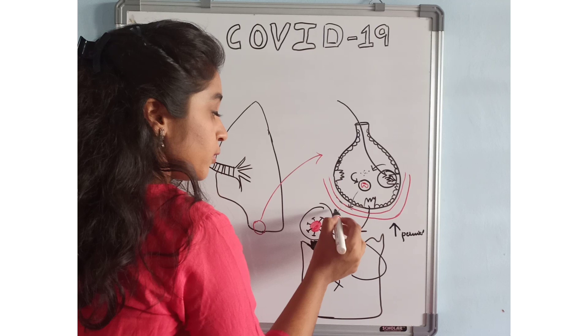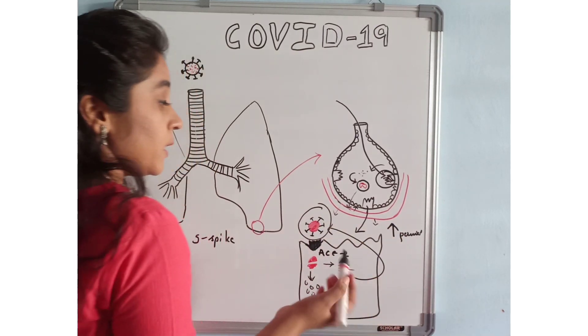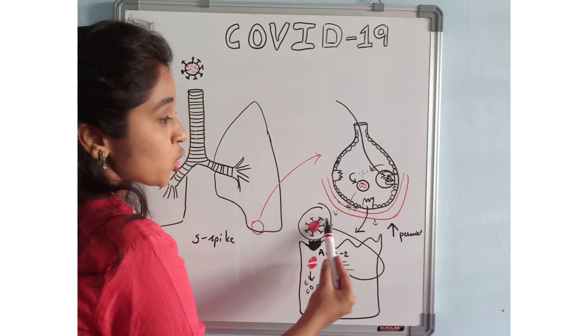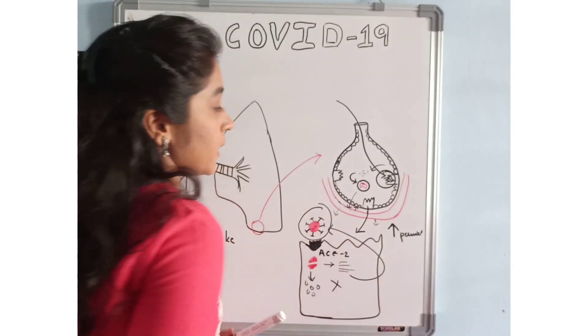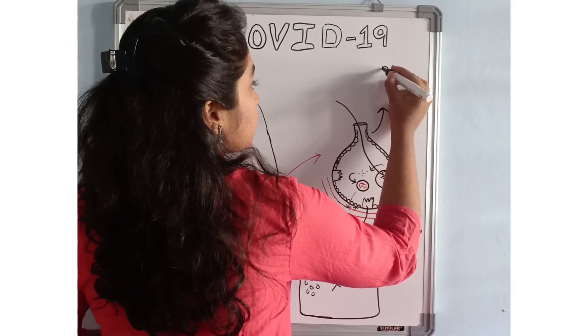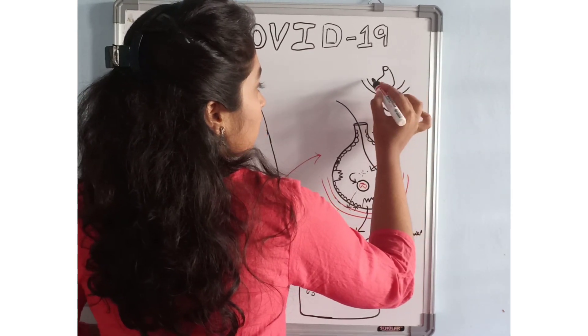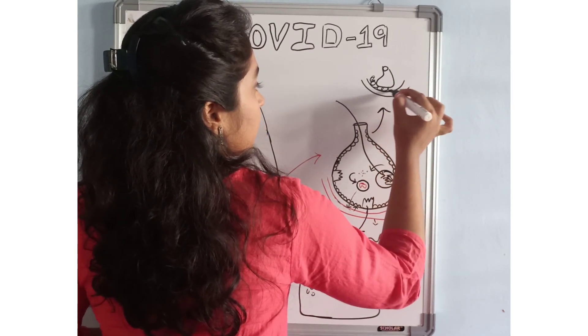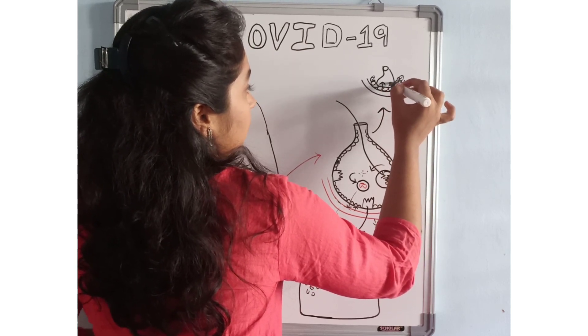That will cause the fluid to go outside of the capillaries. It enters the interstitial space. Once the fluid starts entering the interstitial space, it will start accumulating there and will also get into the alveoli.